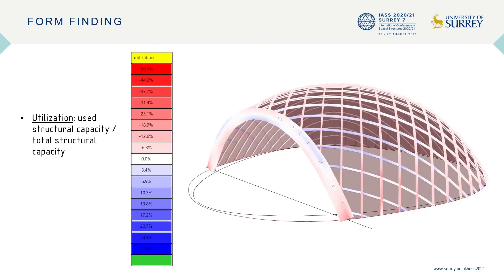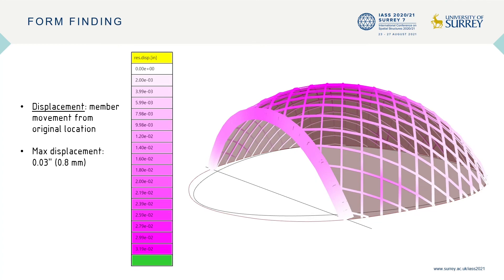The results of the structural analysis were more than sufficient for our requirements. Utilization is the used structural capacity compared to the total structural capacity of the members. Most of the structure remained below 12% utilization. Displacement is the movement of members from their unloaded position. We achieved an extremely low maximum displacement of 0.03 inches, because the structure is close to a funicular form and most of the loading is axial.